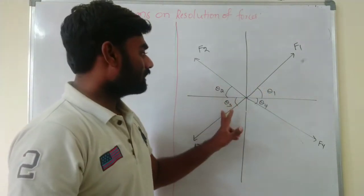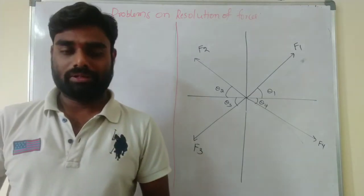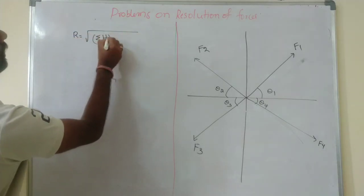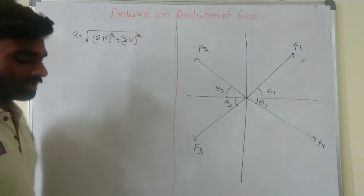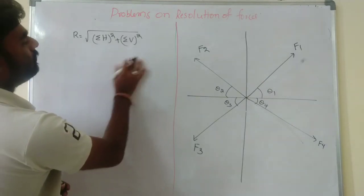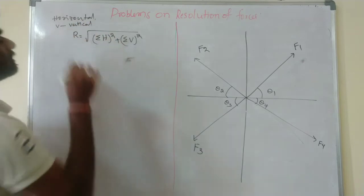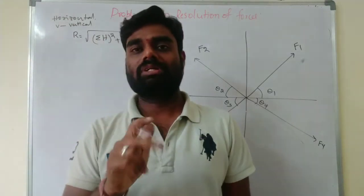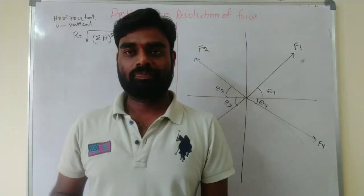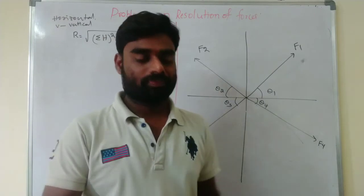How to find out the R value — R means magnitude. We know the formula: R = √(ΣH² + ΣV²), where H means horizontal forces and V means vertical forces. Summation of H means the sum of all horizontal forces, and summation of V means the sum of all vertical forces. We need to extract these horizontal and vertical components from F1, F2, F3, and F4.